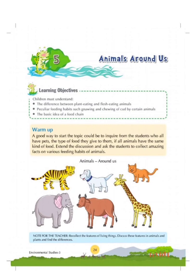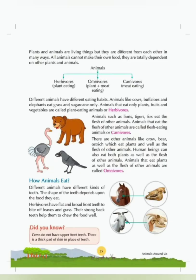Today we are going to study about the animals around us. In this chapter, we will be talking about different types of animals based on their feeding habits. We will also be understanding the peculiar feeding habits such as gnawing and chewing the cud. We will also get the basic idea of a food chain. So let's start the chapter.